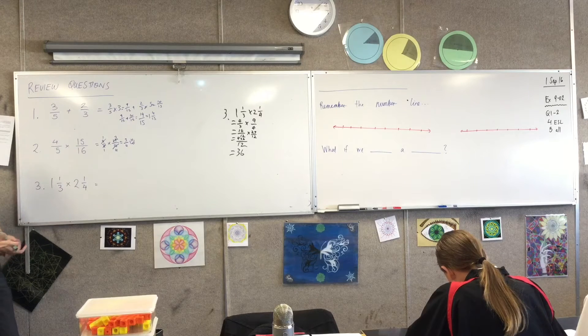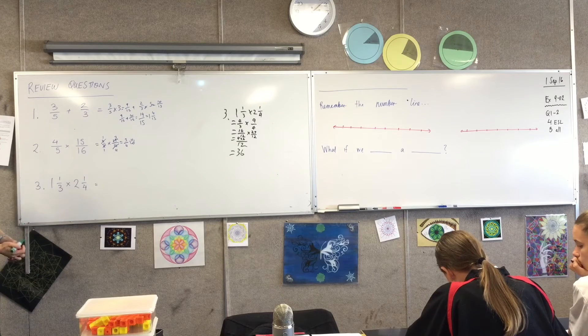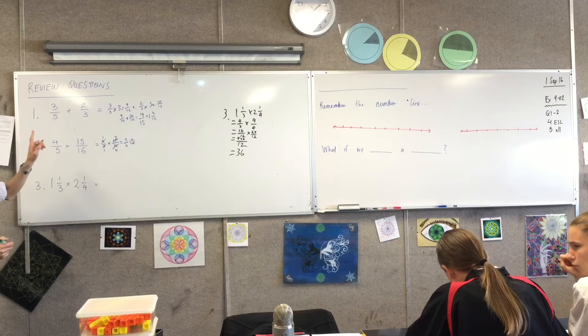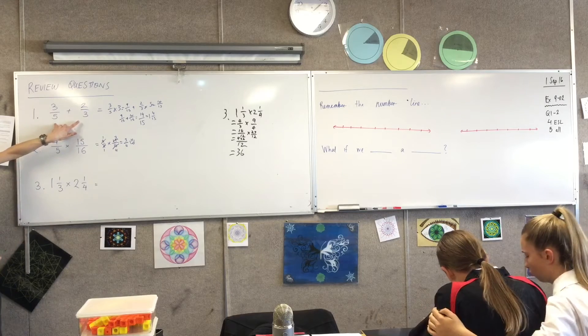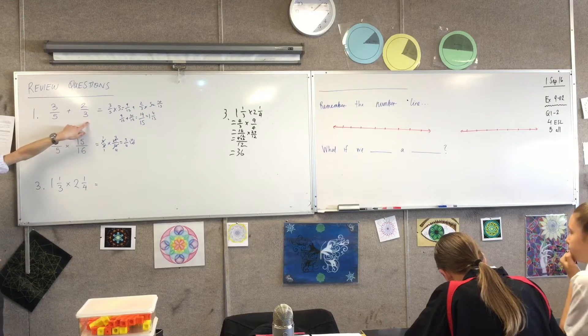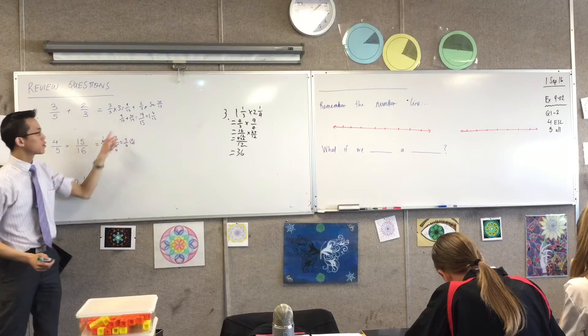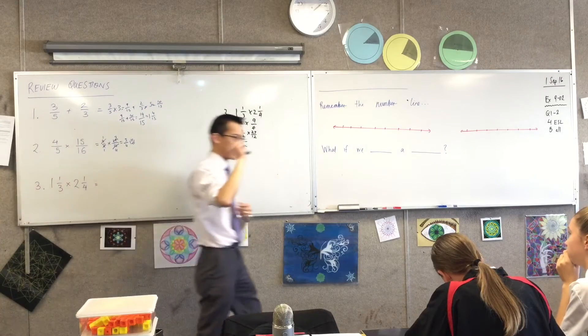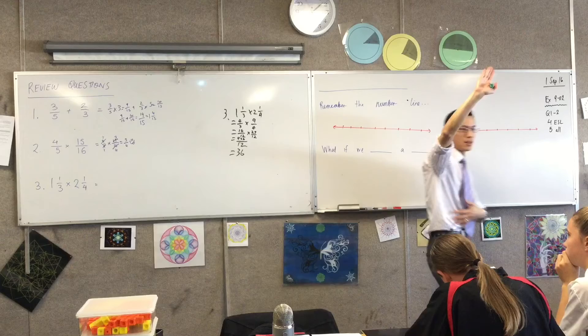Let's have a look at each of these questions. Okay, so we'll start at the top. Now, interestingly, I see there is three-fifths plus two-thirds, and then when we have a look at this working here, just for starters, who agrees with the final answer?